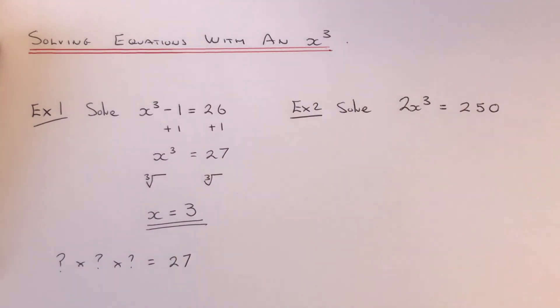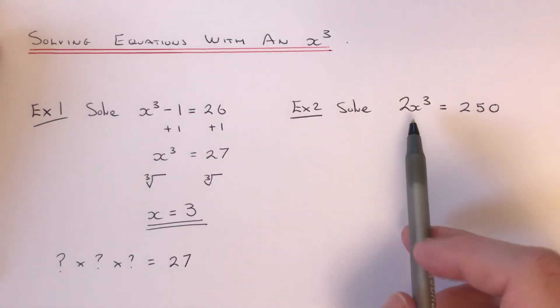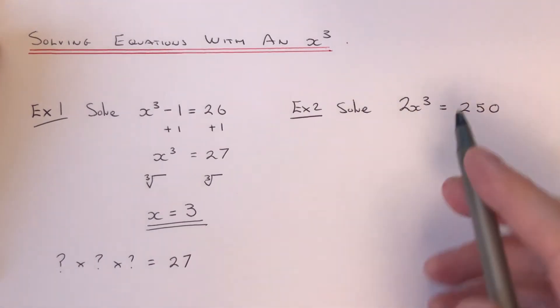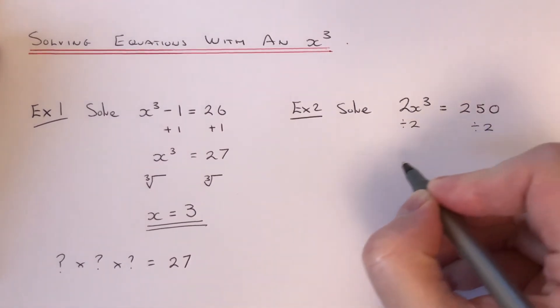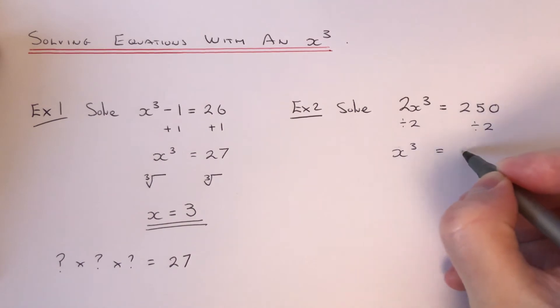So let's have a look at example 2 then. So this time we've got 2x cubed equals 250. So we've got to be careful on this one. First of all, I've got to get rid of the 2 by dividing 2 on both sides. So this will give x cubed equals 125.